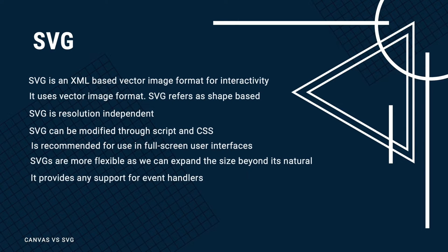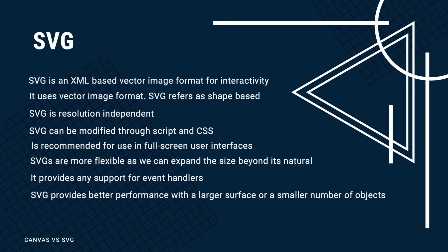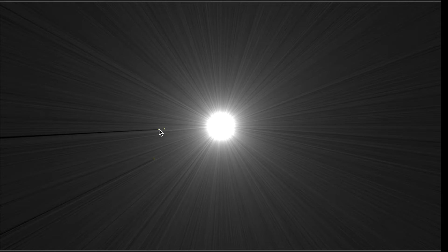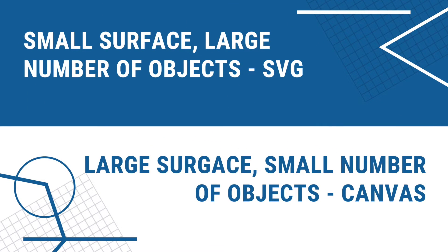SVG uses the DOM, which means that if the application uses a lot of elements or items it can slow down the rendering. SVG and Canvas are fundamentally different but are both used to create incredible visual experiences. Canvas is not good for large screens and is not scalable, but it allows you to animate thousands of objects without that overhead as it doesn't have a DOM. For large screens it is better to use SVG, as SVG images are resolution independent and will not lose their shape.